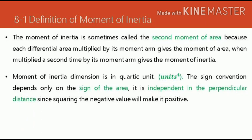Next, the sign convention depends only on the sign of the area. It is independent of the perpendicular distance since squaring the negative value will make it positive. Okay? So what dictates the sign of the moment of inertia is the area. Because if you consider the distance, even if it's in the negative x-axis or negative y-axis, if you square it or raise it to the 4th, the negative will cancel. Because negative times negative will also equal positive. So the sign convention that will prevail there is the sign of the area.